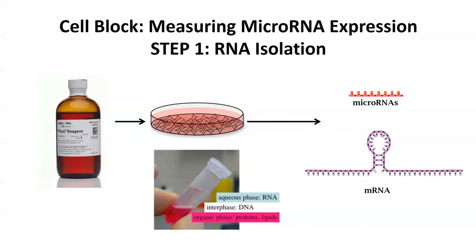To outline the steps of this overall protocol, first you need RNA. Before we can look at the expression levels of these microRNAs in the cell, we need to actually isolate RNA. This can be done very easily using trizol reagent, which can directly isolate RNA from a dish of cells, capturing all the RNAs in the cell including messenger RNAs, microRNAs, and other types. You could also use an RNA or microRNA purification kit.